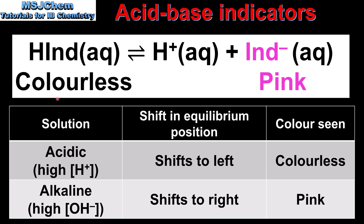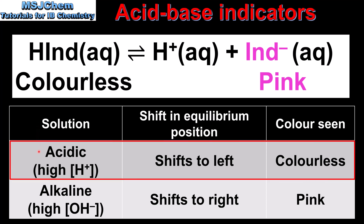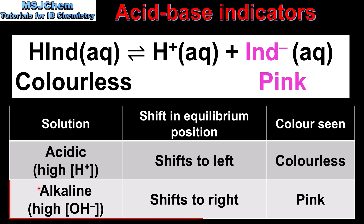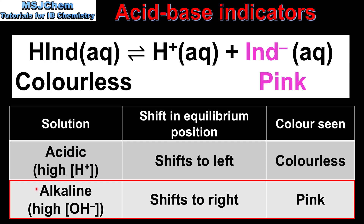In an alkaline solution, which has a high concentration of hydroxide ions, the equilibrium position will shift to the right, in the direction of the ionized form or the conjugate base. This is because the excess hydroxide ions react with the hydrogen ions, so to produce more hydrogen ions the equilibrium shifts right. In an alkaline solution, phenolphthalein is pink. This is summarized in the table: acidic — equilibrium shifts left, color is colorless; alkaline — equilibrium shifts right, color is pink.